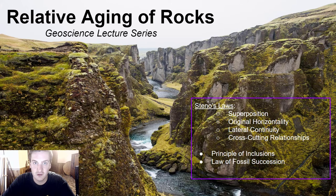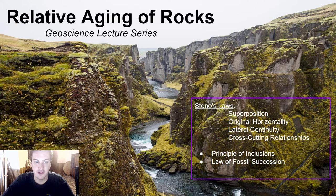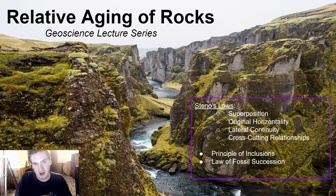In order to assist us with this, we're going to use Steno's laws. Steno's laws include superposition, original horizontality, lateral continuity, and cross-cutting relationships. We'll provide examples of every one of those, and we'll also talk about the principle of inclusions and the law of fossil succession. These are tools in our geologic toolbox that are going to help us determine the rough ages of different geologic events as we try to put together Earth's geologic history.